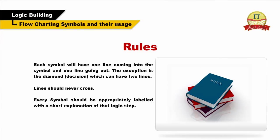Each symbol will have one line coming into the symbol and one line going out. The only exception to this rule is the diamond or decision box, which can have two lines. Lines should never cross. Every symbol should be appropriately labeled with a short explanation of that logic step.